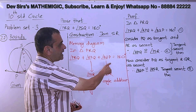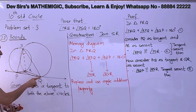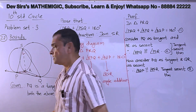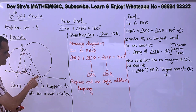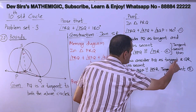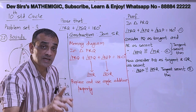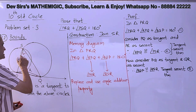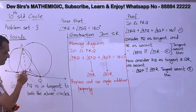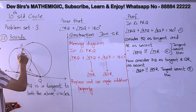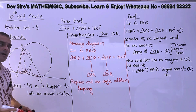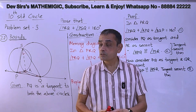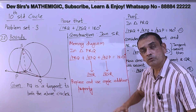Both sides of the diagram use the tangent secant theorem. According to the memory diagram, angle RPQ is congruent to angle PSR, and angle RQP is congruent to angle QSR. These two pairs of angles are now both shown congruent — that's all needed for the substitution.